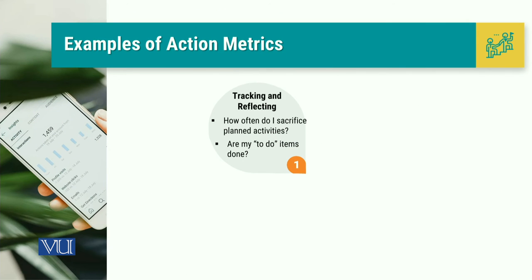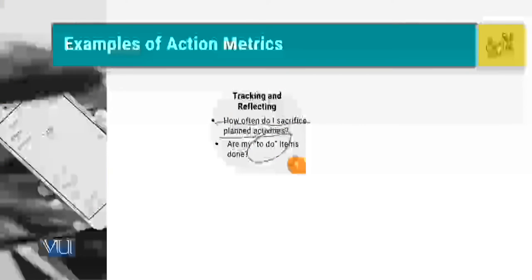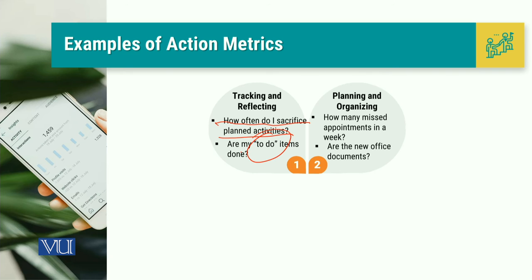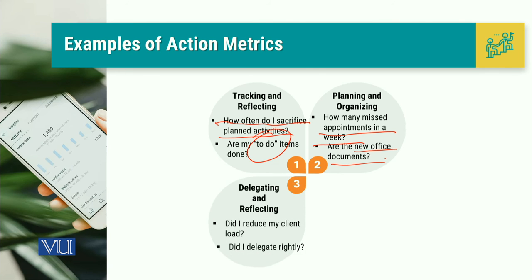When we talk about action matrices, examples can be: how often do I sacrifice planned activities? — this shows my action plan and whether I am executing it. Are my to-do items done? Because in my priority list, I clearly mention what I want to do. When I talk about planning and organizing, how many missed appointments do I have in a week, or are the new office documents ready? These are things we are planning and organizing to fill the action matrix.